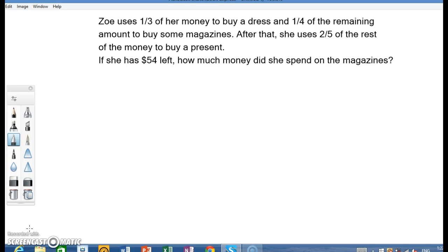Zoe uses one third of her money to buy a dress and one quarter of the remaining amount to buy some magazines. After that, she uses two fifths of the rest of the money to buy a present. If she has $54 left, how much money did she spend on the magazines?